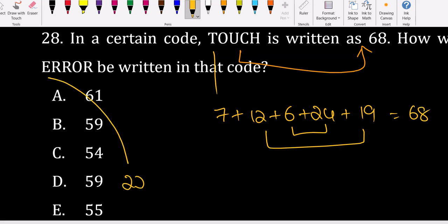For ERROR in reverse code: E is 22, R is 9 times 3 equals 27, O is 12, R is 9. That's 22 plus 27 plus 12 equals 61. So 61 is the correct answer.